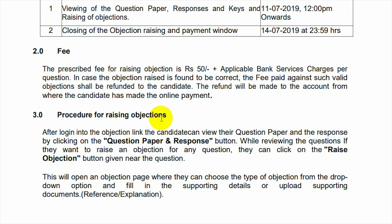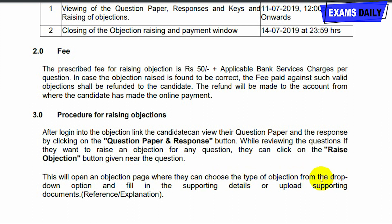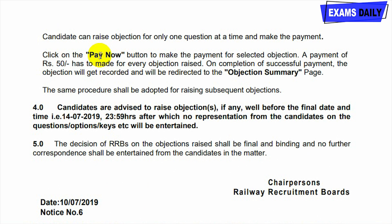For the procedure for raising an objection: after logging in to the objection link, the candidate can view their question paper and response sheet by clicking the 'Question Paper Response' button. If you have any objection regarding a question, click the 'Raise Objection' button near that question. This will open an objection page where you can choose the type of objection from the drop-down option and fill in supporting details or upload supporting documents.